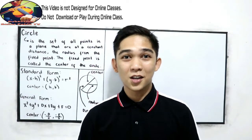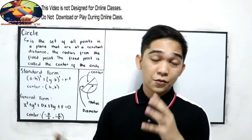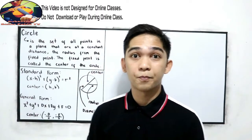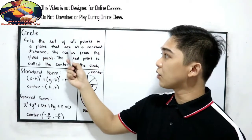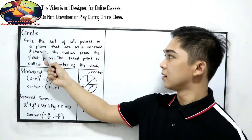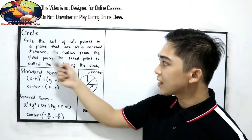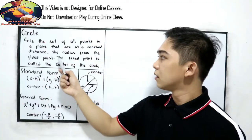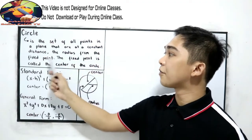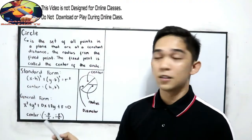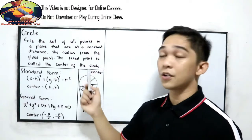Hello everyone, welcome to Senior Pablo TV. First, let us define what is a circle. A circle is the set of all points in a plane that are at a constant distance — the radius — from a fixed point. The fixed point is called the center of the circle.